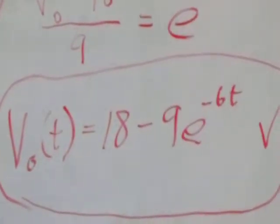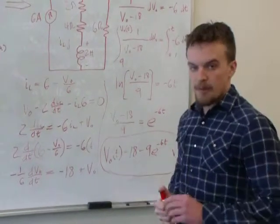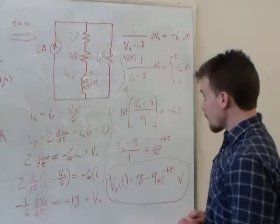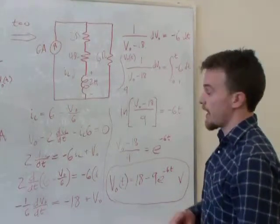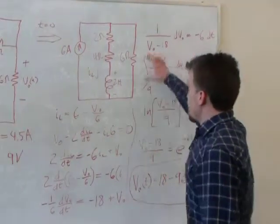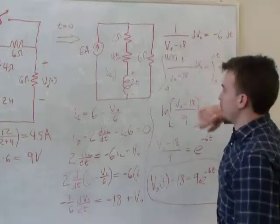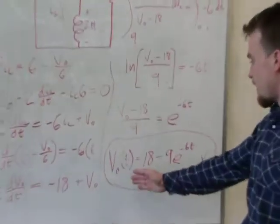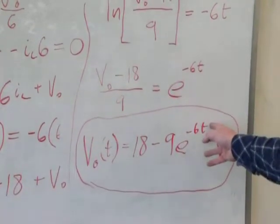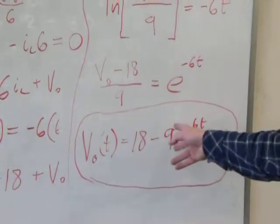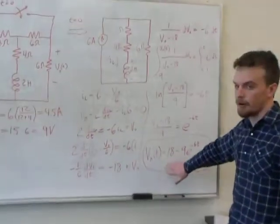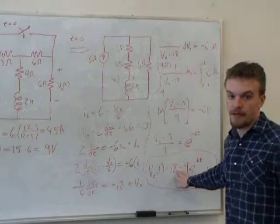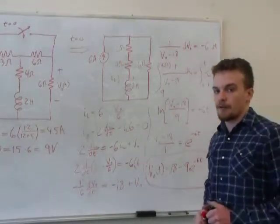A good thing to do after solving differential equations is to step back and look at your answer to see if it makes qualitative sense. Since an inductor eventually acts like a short circuit, we know this voltage as a function of time will eventually settle down to a constant voltage. Looking at our equation, as time goes to infinity this exponential term goes to 0 — initially it equals 9, eventually it equals 0. So our voltage goes from 18 minus 9, which is 9, and gradually rises to settle at a value of 18. That makes sense, and it's a good way to tell if your answer is probably right.